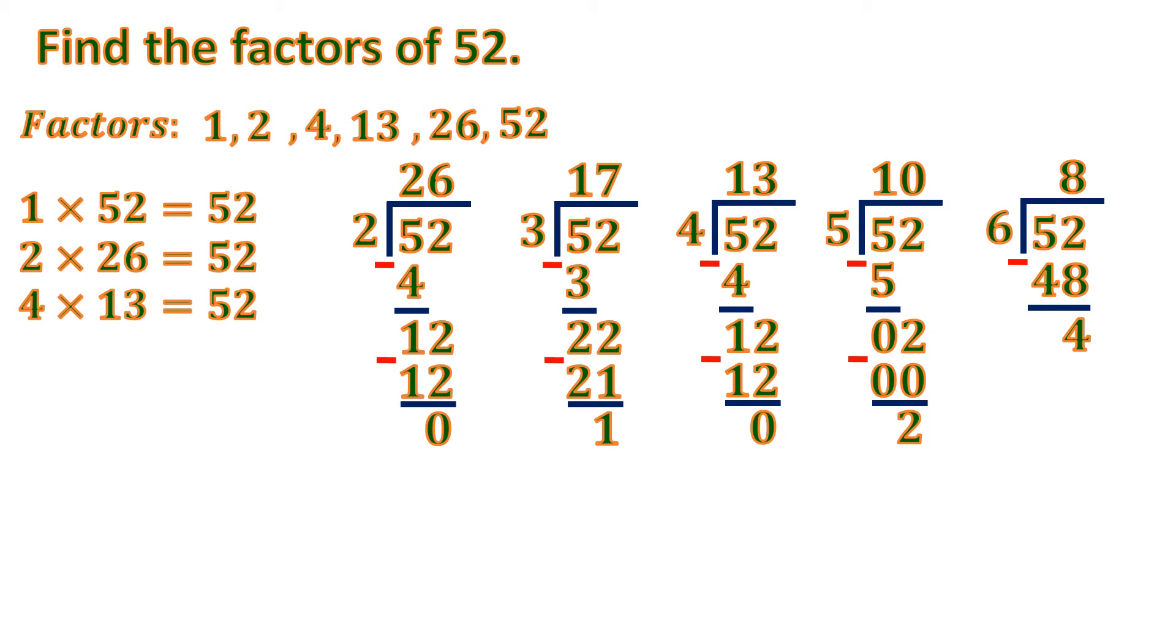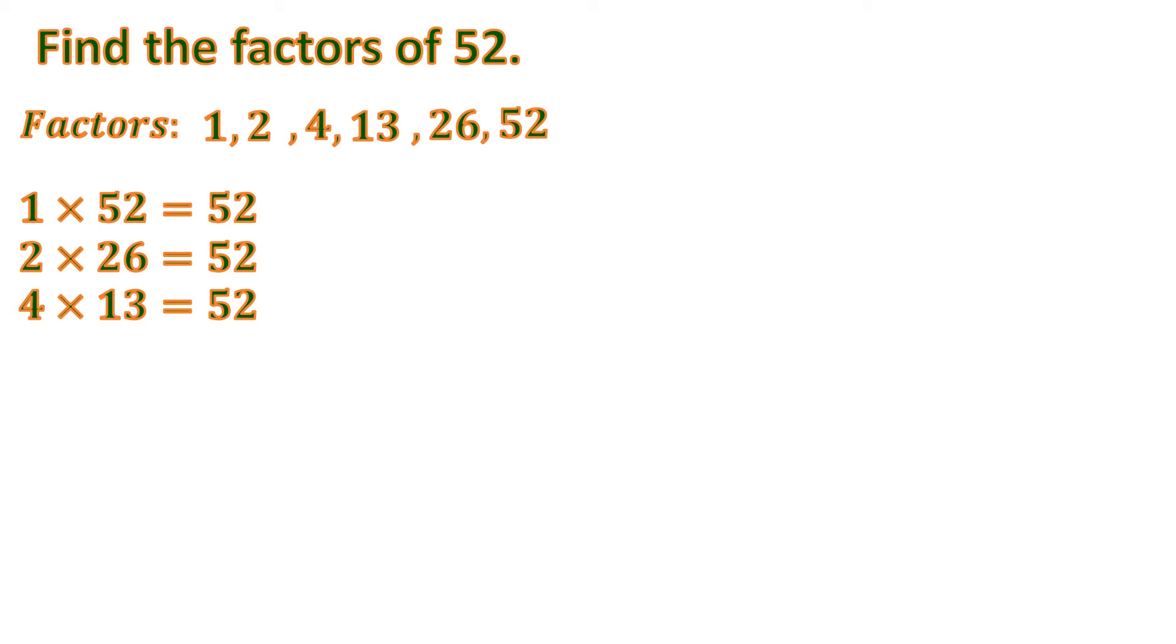And let's continue. So let us remove the previous solutions, because we don't have enough space. So let's continue. So 52 divided by 7. So 7, because 7 times 7 is 49. And subtract. 52 minus 49 is 3. So we have remainder 3. So 7 is not a factor of 52.